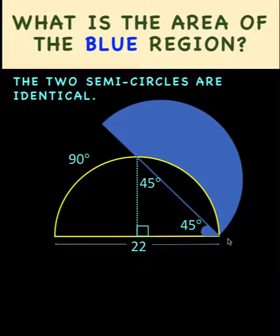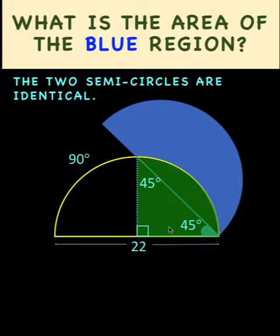And since we have a semicircle here, that means the measure of this other arc is also 90 degrees. And so clearly, what we have here is a quarter circle. And since we have a quarter circle, then the radius now of this semicircle must be half this 22. The radius is 11.